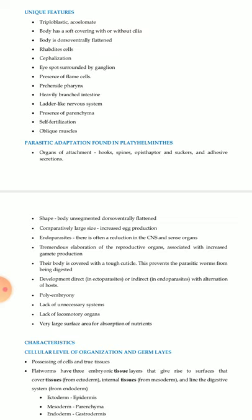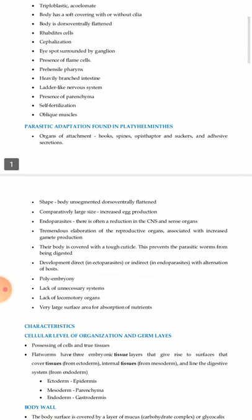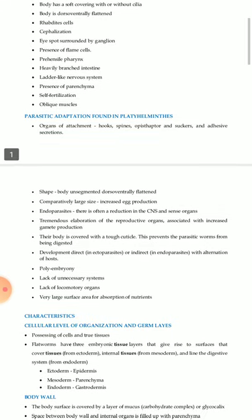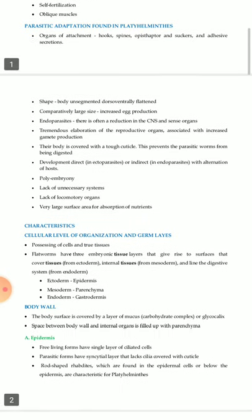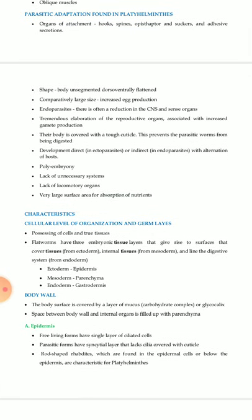Unique features: triploblastic, acoelomate body with soft covering with or without cilia; body is also ventrally flattened. Rhabdite cells, cephalization, eye spots surrounded by ganglia, presence of flame cells, prehensile pharynx, heavily branched intestine, ladder-like nervous system, presence of parenchyma, self-fertilization, and oblique muscles.